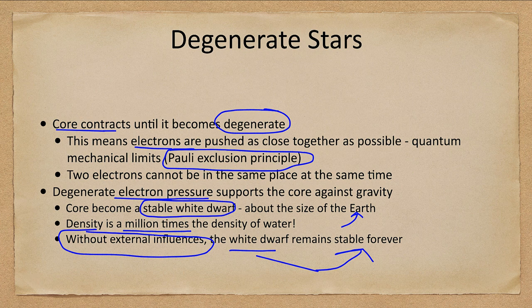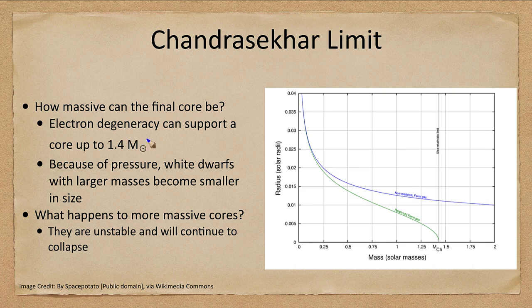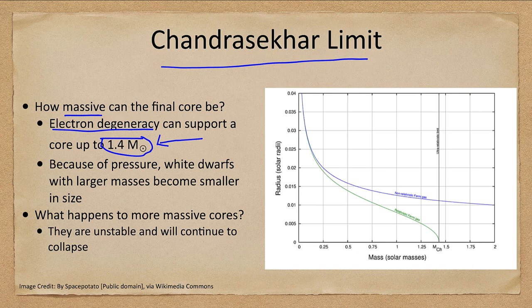Now let's look at why we picked this 1.4 solar mass limit. There is a limit to how much mass electron degeneracy pressure can support. Imagine a rickety old table — you start piling heavy books on it, you can put a few, then a few more, but eventually you put one too many and the table collapses. The same thing happens here: there is a limit to how much pressure those degenerate electrons can exert. If you exceed that limit — which is 1.4 solar masses, also known as the Chandrasekhar limit, after the astronomer who calculated it — the core collapses.